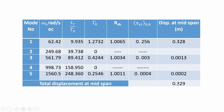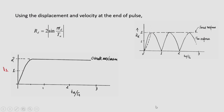Similarly, response spectrum for velocity and acceleration can also be constructed — differentiate the displacement expression with respect to time to get velocity, differentiate again for acceleration, and plot these non-dimensional quantities as a function of Tr/Tn. This gives velocity and acceleration response spectrum curves alongside the displacement response spectrum Rd.